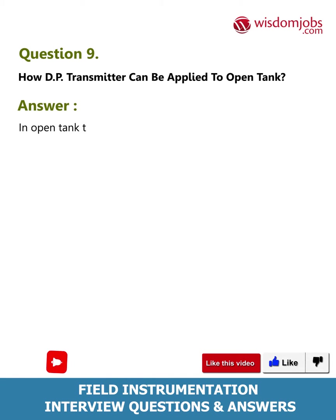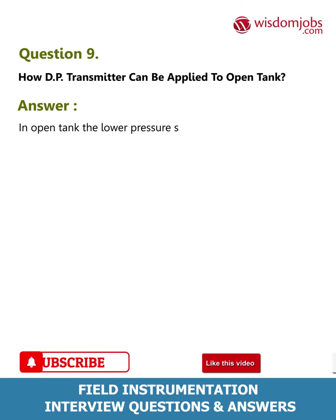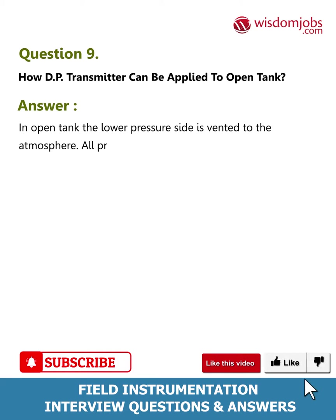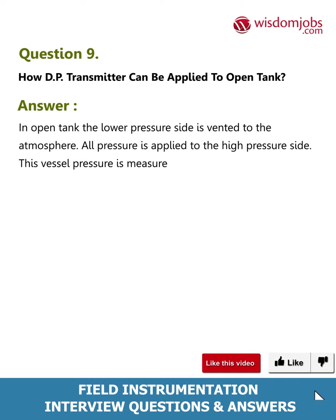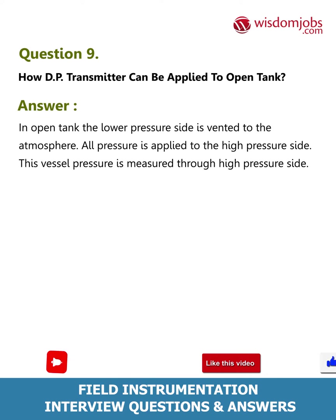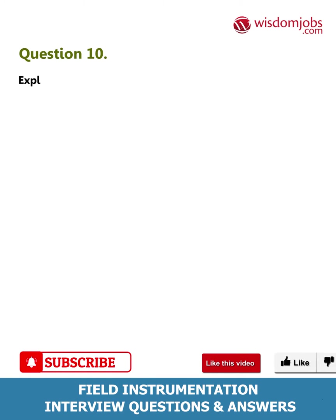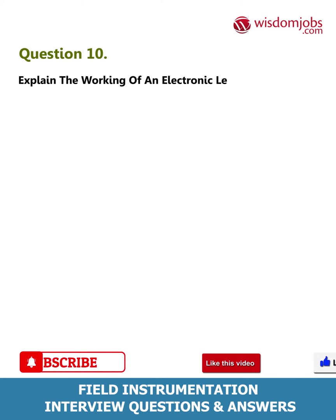Question 9: How can a DP transmitter be applied to an open tank? Answer: In an open tank, the lower pressure side is vented to the atmosphere. All pressure is applied to the high pressure side. The vessel pressure is measured through the high pressure side.